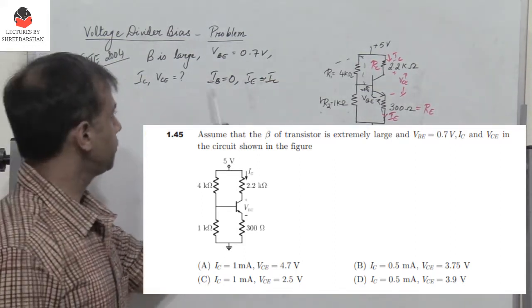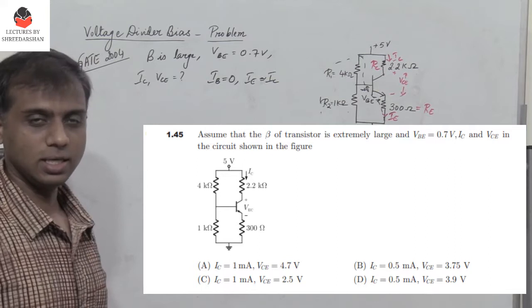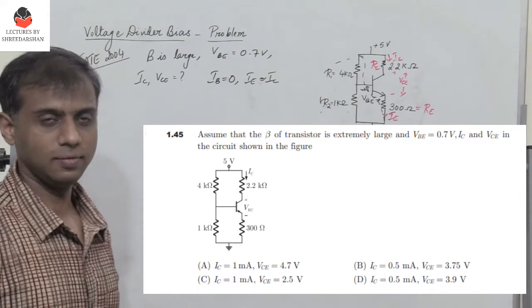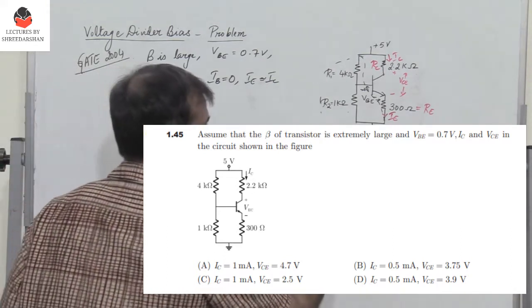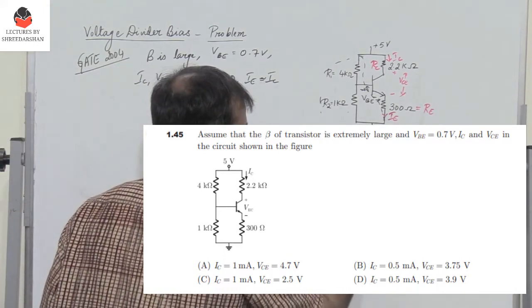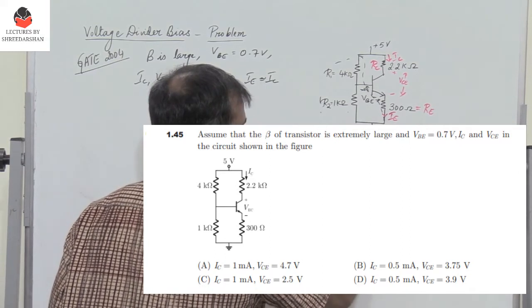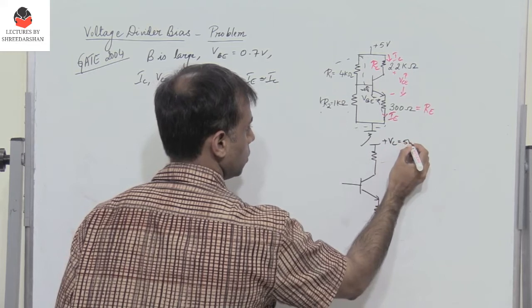Now in order to find the value of Ic and Vce, let us write the equivalent circuit by applying Thevenin's theorem. So we get the circuit as Rc which is connected to plus Vc which is 5 volts.